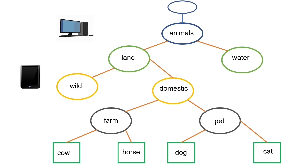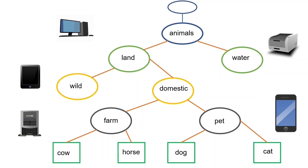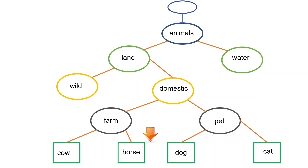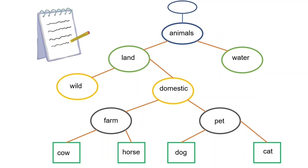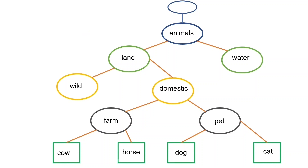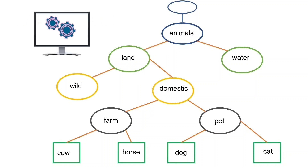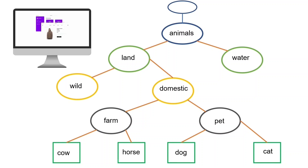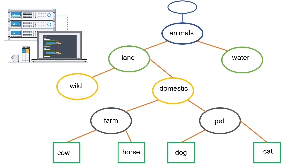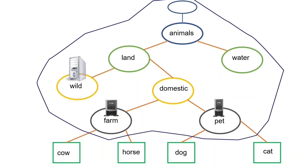A node is a system — it can be an endpoint, a server, or any other computer or device that needs and uses a name. In this database, cat, dog, horse, cow, farm, pet, wild, domestic, land, water, and animals are examples of nodes. If we want to access a node by its name, we need to create a resource record for it in the zone file of its parent name server, including the node name and IP address. A host is a node that hosts and runs a service; it gets its name from the service it runs. For example, if a host runs a web service, it is called the web server; if it runs the DNS service, it is called the DNS server or name server. A name server runs a DNS service and provides answers to DNS queries. In our example, farm, pet, wild, domestic, land, water, animals, and root are examples of name servers.